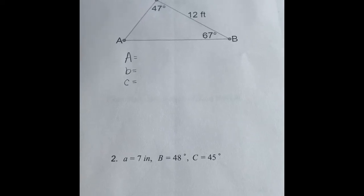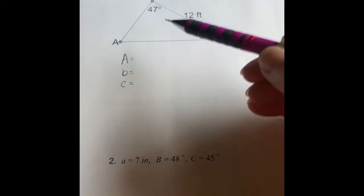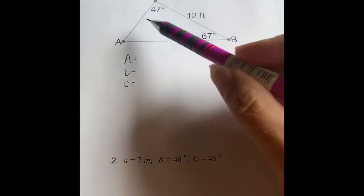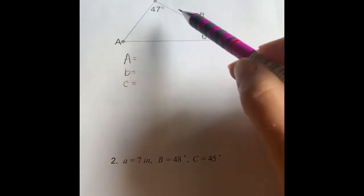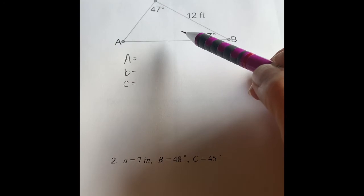So first let's identify the information that we know both of. We know angle C, but we don't know side C. We know angle B, but we don't know side B. And we know side A, but we don't know angle A. So how do we know which one we should use first?